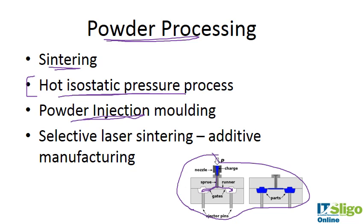Selective laser sintering is another method — it's an additive manufacturing method, covered elsewhere in this course. It's part of the additive manufacturing suite of techniques, sometimes called rapid prototyping. The part is built up layer by layer using a laser to trace out the dimensions, and the laser also helps to sinter and fuse the particles. I'll refer you back to previous slides on those techniques.